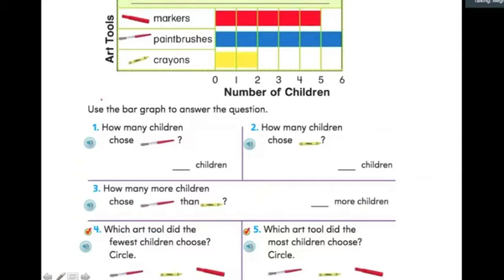All right. So, here's the first question. How many children chose paint brushes? So, I can look at my bar graph, find paint brushes, and I can do two things. I could either count the boxes, or I could just go to the end of the bar and go straight down to the number line to see how many it's showing us. And there are six. So, I know that six children chose paint brushes as their favorite art tool.